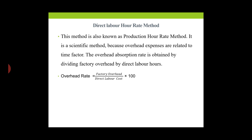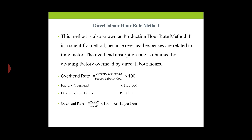The Direct Labor Hour Rate Method is also known as the Production Hour Rate Method. It is a scientific method because overhead expenses are related to the time factor. The overhead absorption rate is obtained by dividing factory overhead by direct labor hours. Overhead rate = Factory Overhead / Direct Labor Hours. For example, factory overhead is Rs. 1 lakh and direct labor hours are 10,000, so overhead rate = 1,00,000 / 10,000 = Rs. 10 per hour.